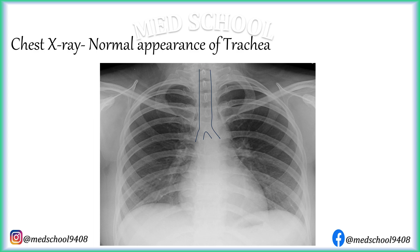Normally, trachea divides into left and right bronchus at the level of the 4th thoracic vertebra. This point is called the carina. The first thoracic vertebra can be identified as the vertebra to which the posterior end of the first rib is attached, and the 4th thoracic vertebra can be counted downwards from it. Right bronchus is more in line with the trachea and is wider than the left bronchus, making the right lung vulnerable for aspiration. Left bronchus is at an angle to the trachea. The angle between right and left bronchus is called the carina angle, normally 40 to 80 degrees. This angle is widened in cases of left atrial enlargement, subcarinal lymphadenopathy, or mass lesion.